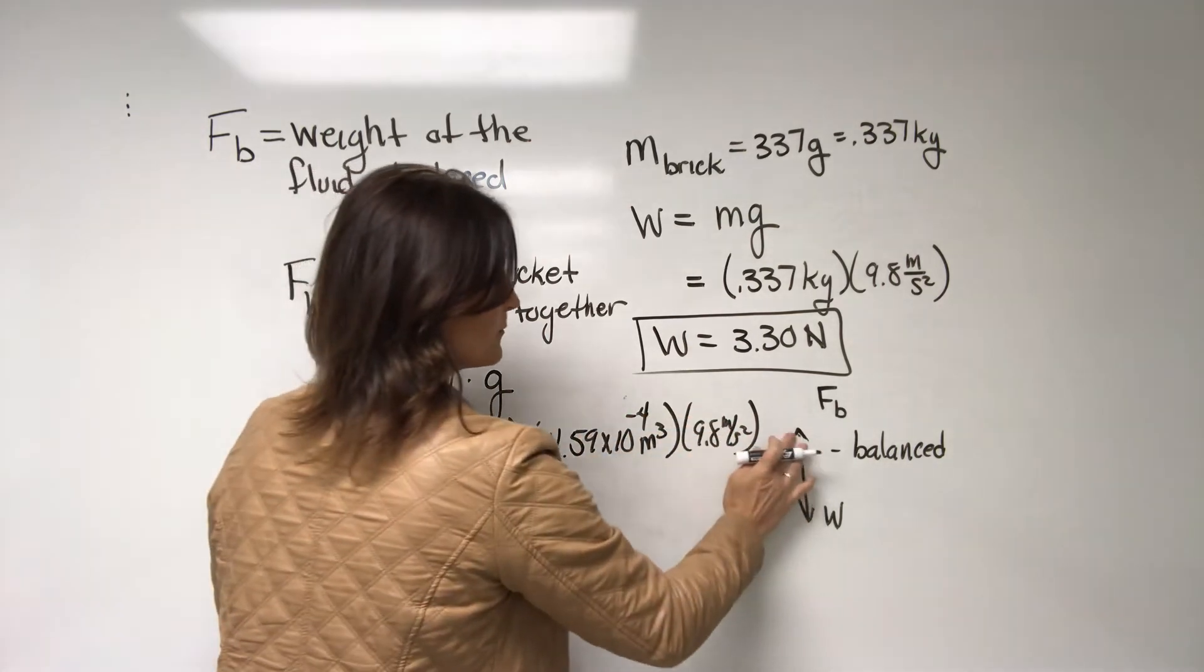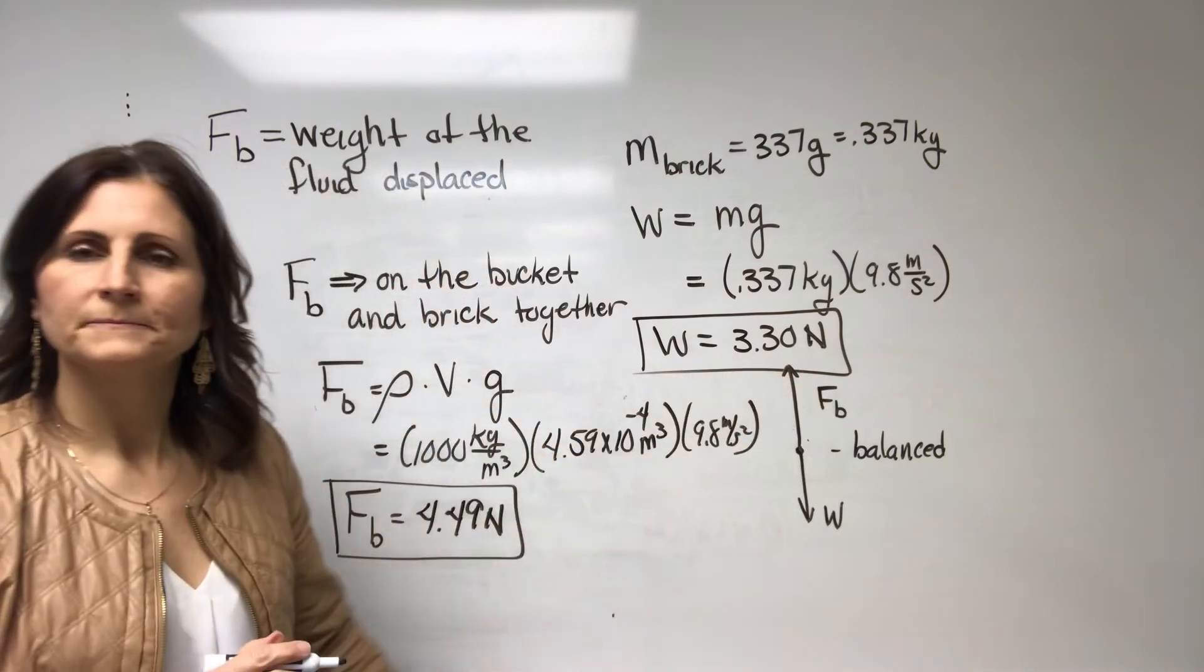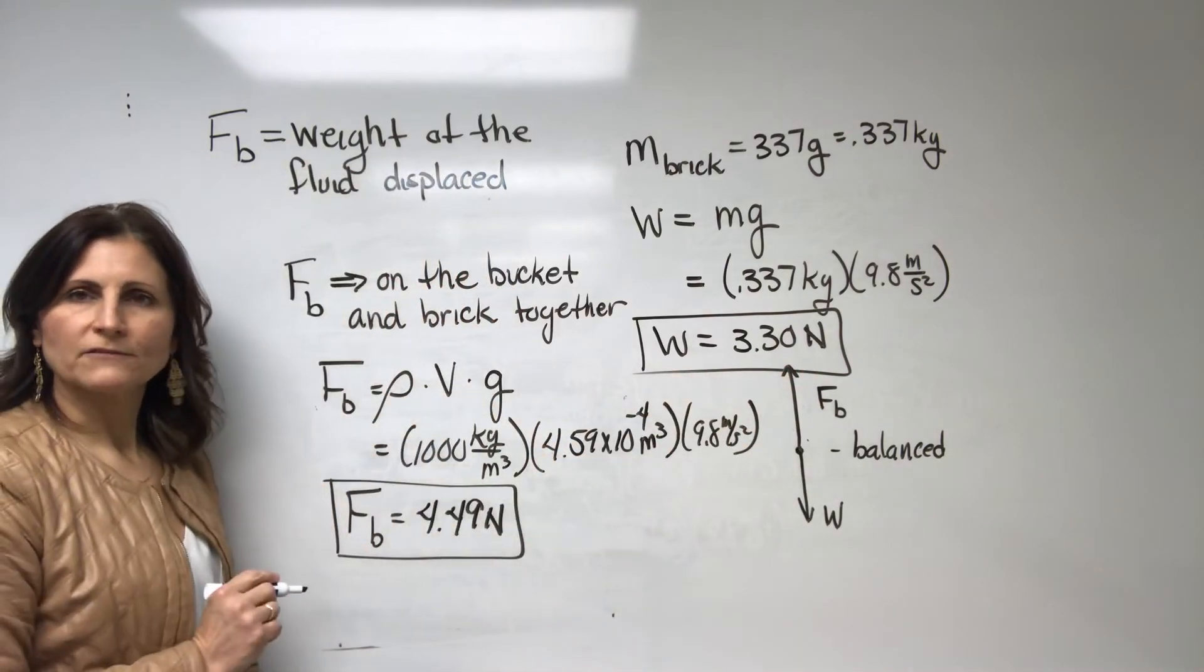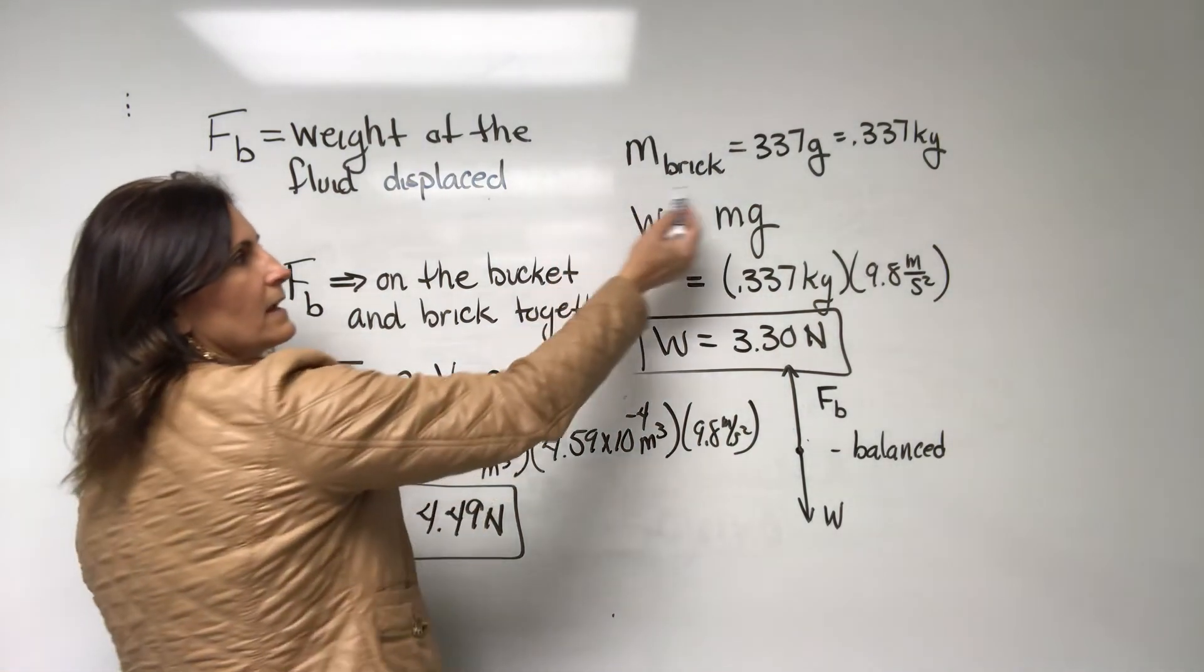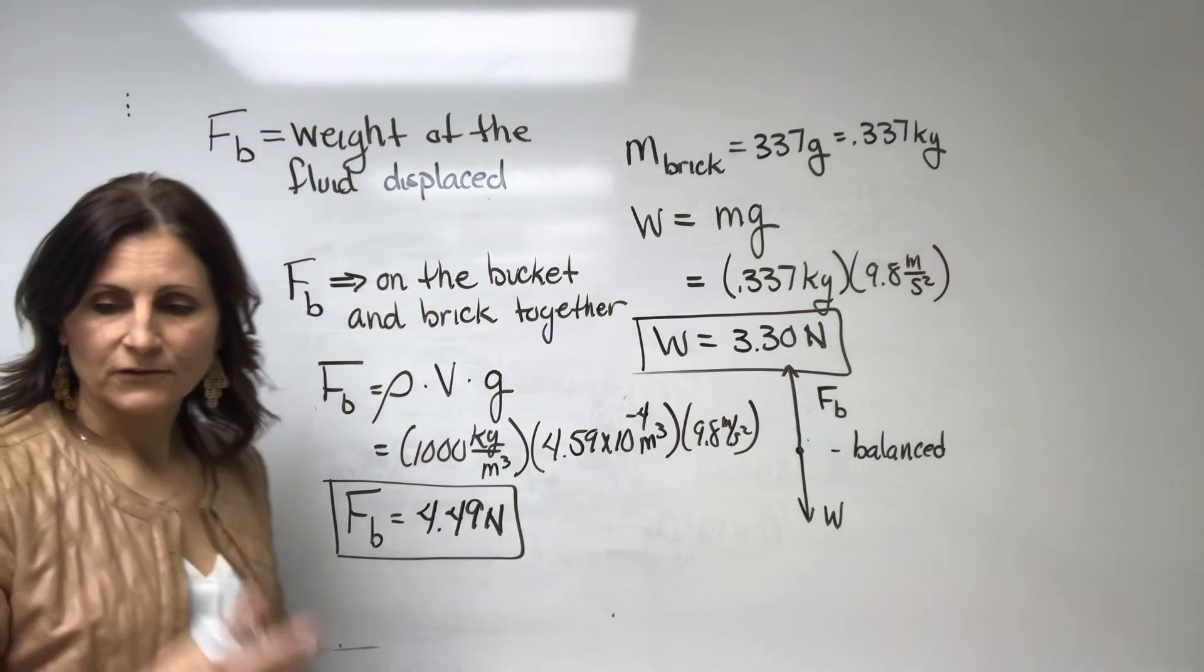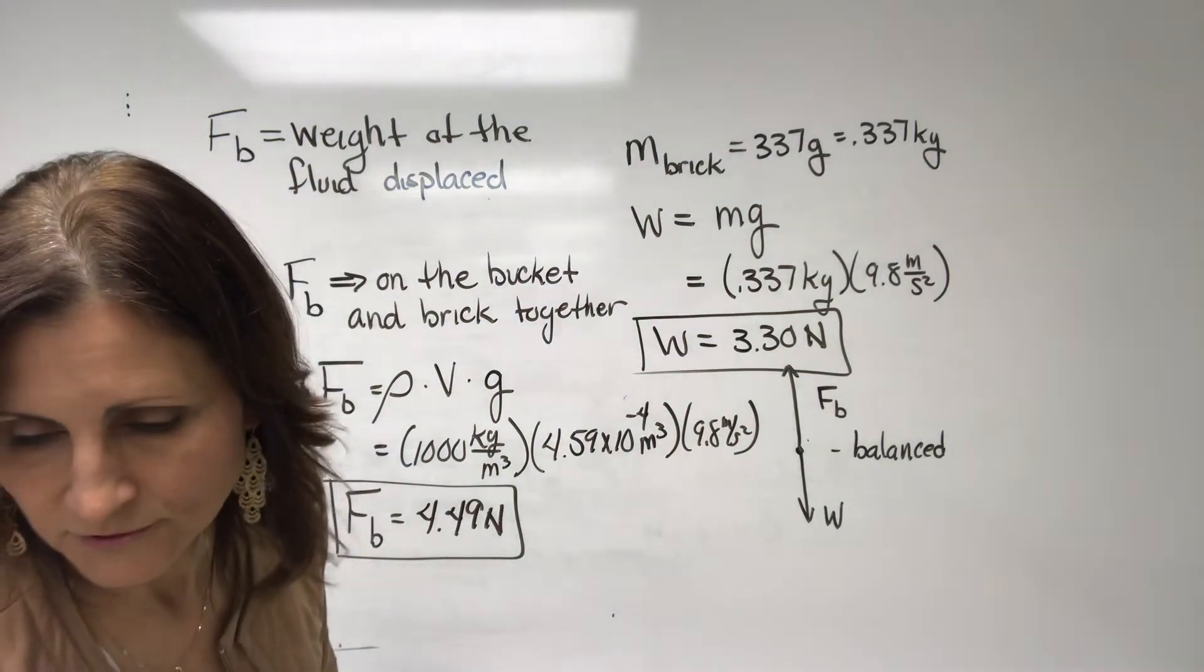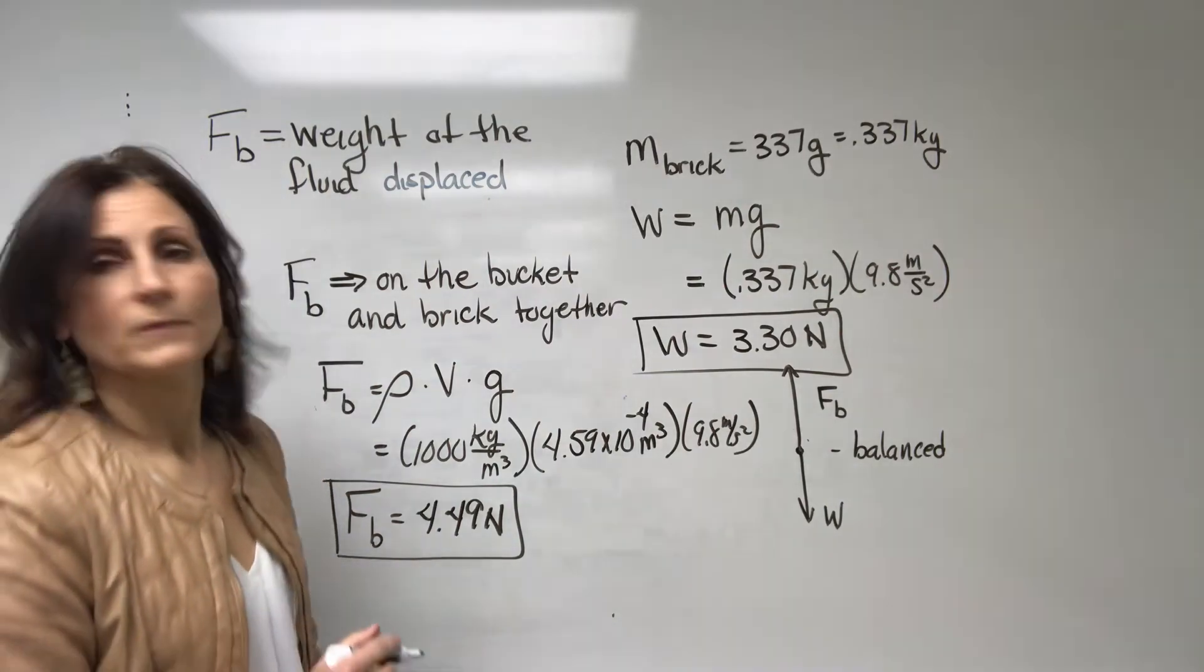Now what we have is a buoyant force that was a little bit more than the brick. Why would that buoyant force have to be a little bit more? Well, we didn't account for the mass of the bucket. So we need the mass of the bucket added into that. And if you'd add that in, the mass of the bucket actually was 122 grams.